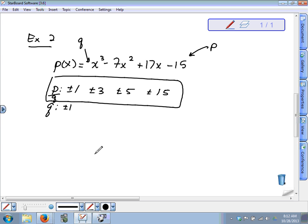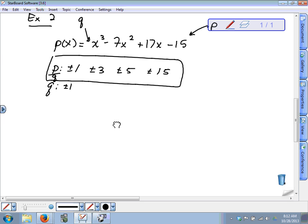Now if q is just plus or minus one, then your values of p are the same as your values of p divided by q. If you divide anything by plus or minus one, it doesn't change the value. So this essentially right here is our list of p divided by q. That's a list of possible rational zeros. That doesn't guarantee that any of these even work. These are just possible rational zeros.